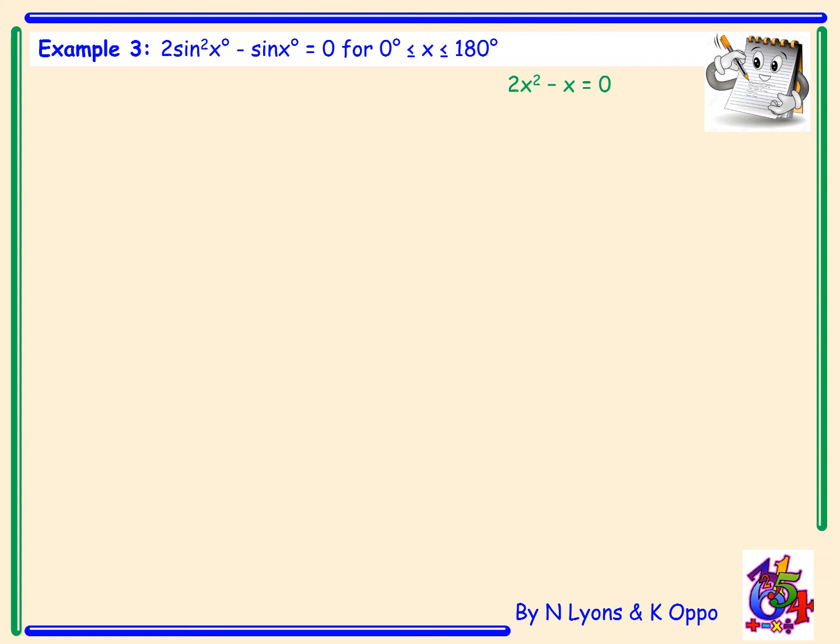We need to factorise here. We have a common factor of x, so taking x outside we get x(2x − 1). Remember x is just the same as sin x, so going back to the original question, factorised it becomes sin x(2 sin x − 1) = 0.